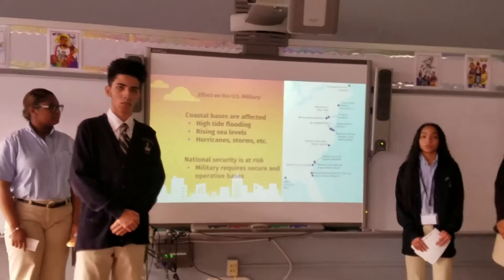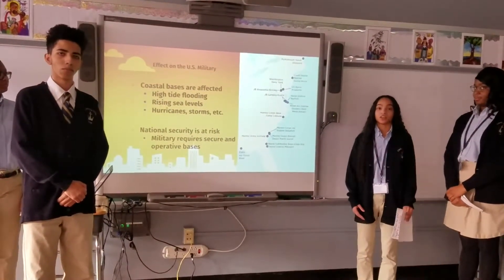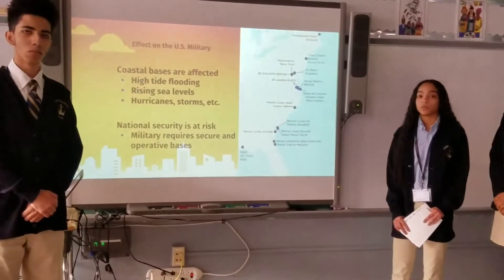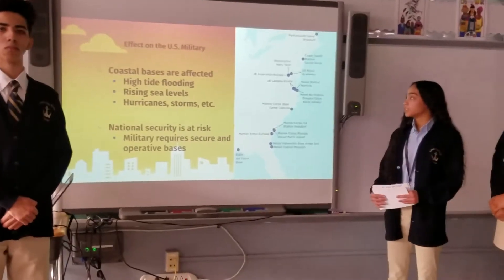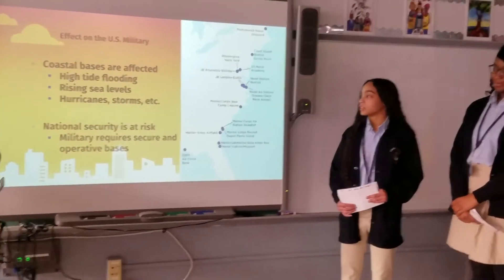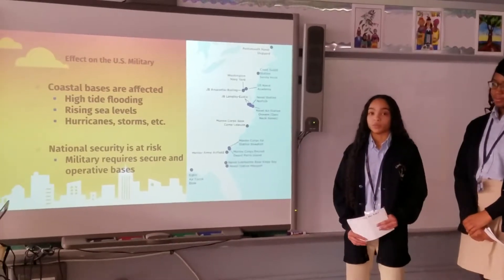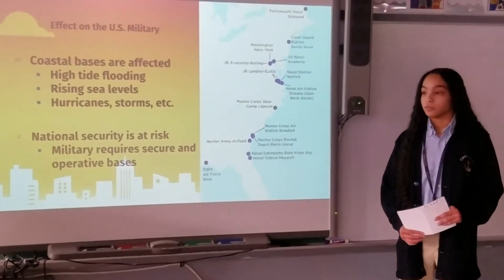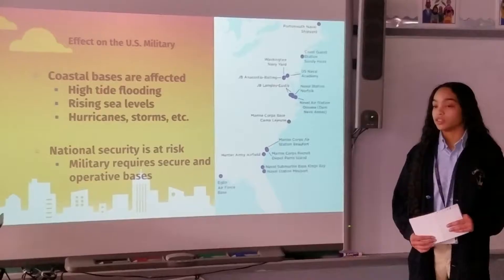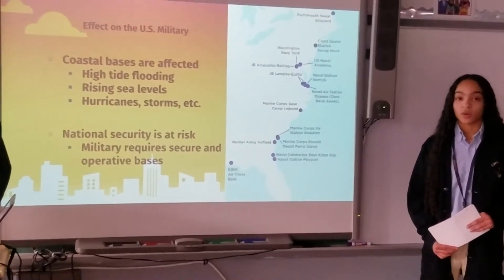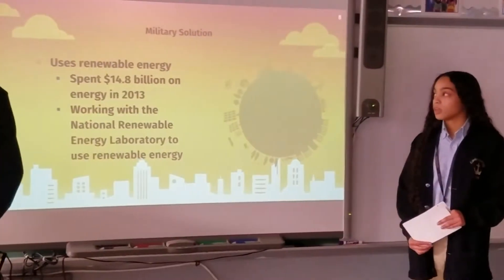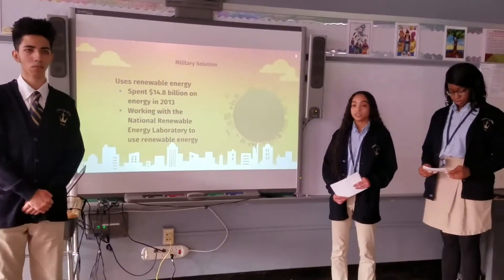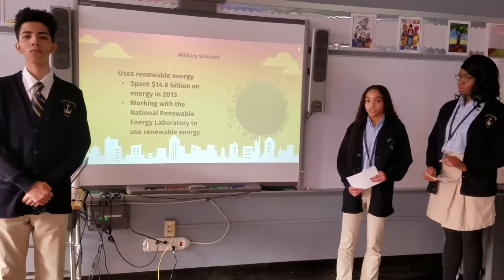As my peer stated, global warming has a severe impact on our environment. However, it also has a severe impact on our military, which in turn puts our national security at risk. Global warming causes high tide flooding, and military bases along the East Coast are at risk of rising sea levels. For example, Camp Lejeune, one of the military's largest bases, was severely affected during Hurricane Florence. In order to ensure the protection of our national security, our military requires operative and secure bases. To solve the problem global warming has caused, the military has turned to using renewable energy, spending $14.8 billion in renewable energy in 2013.